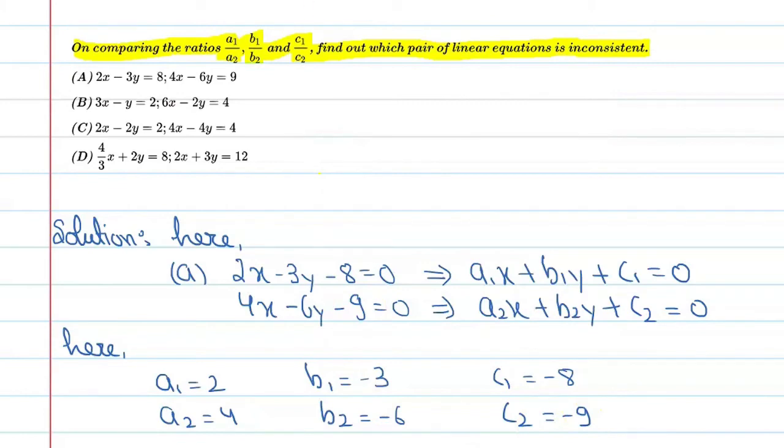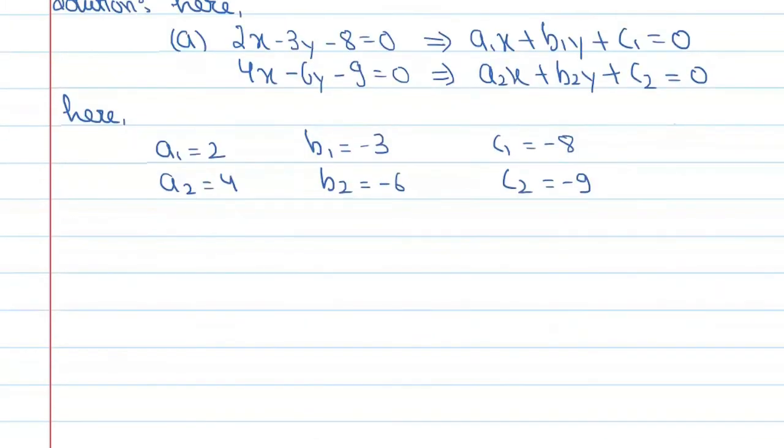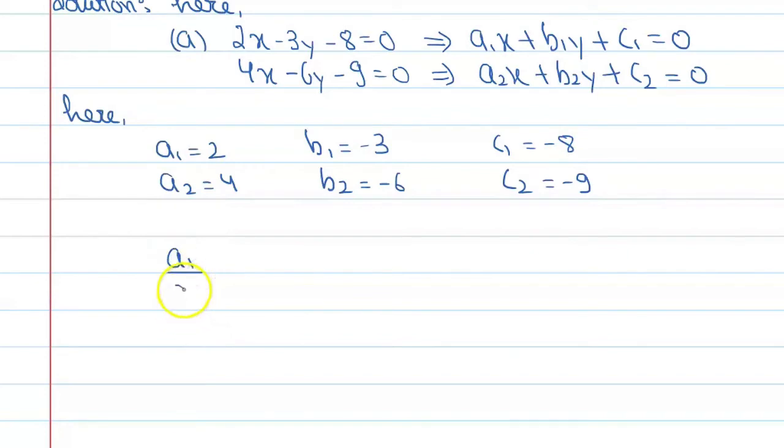Find the ratios. If you find the value of A1 upon A2, it is 2 upon 4. Cancel it and we will get 1 upon 2.